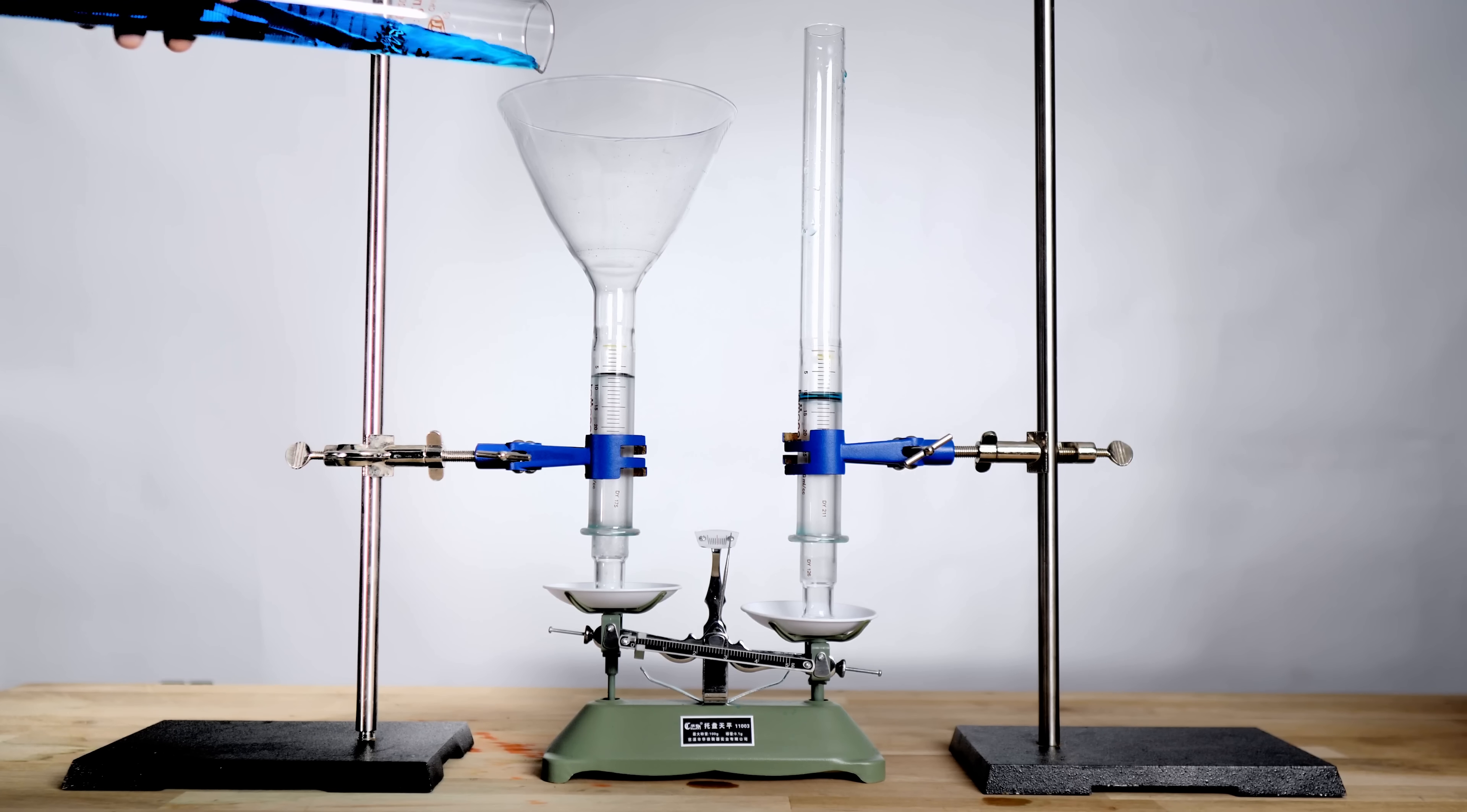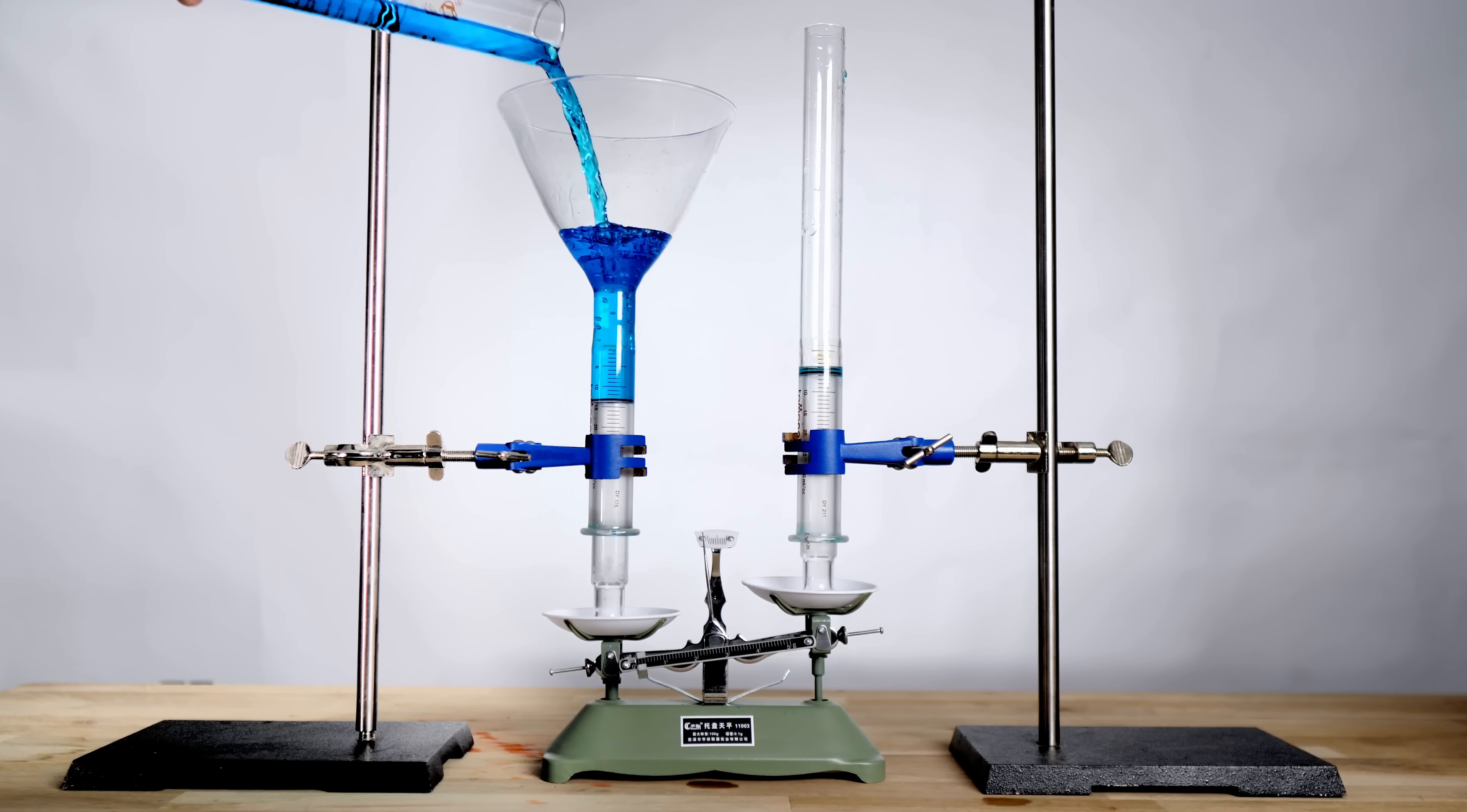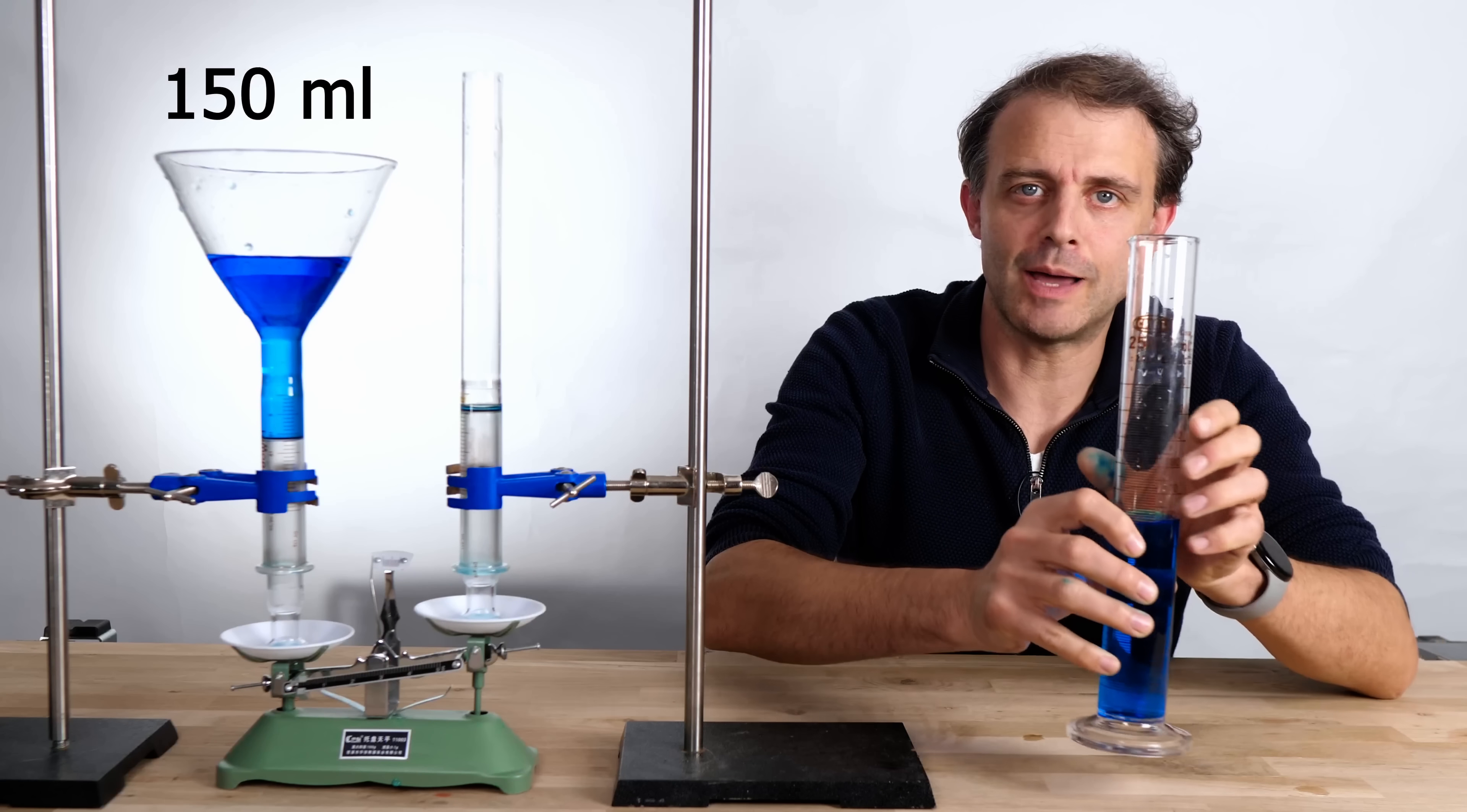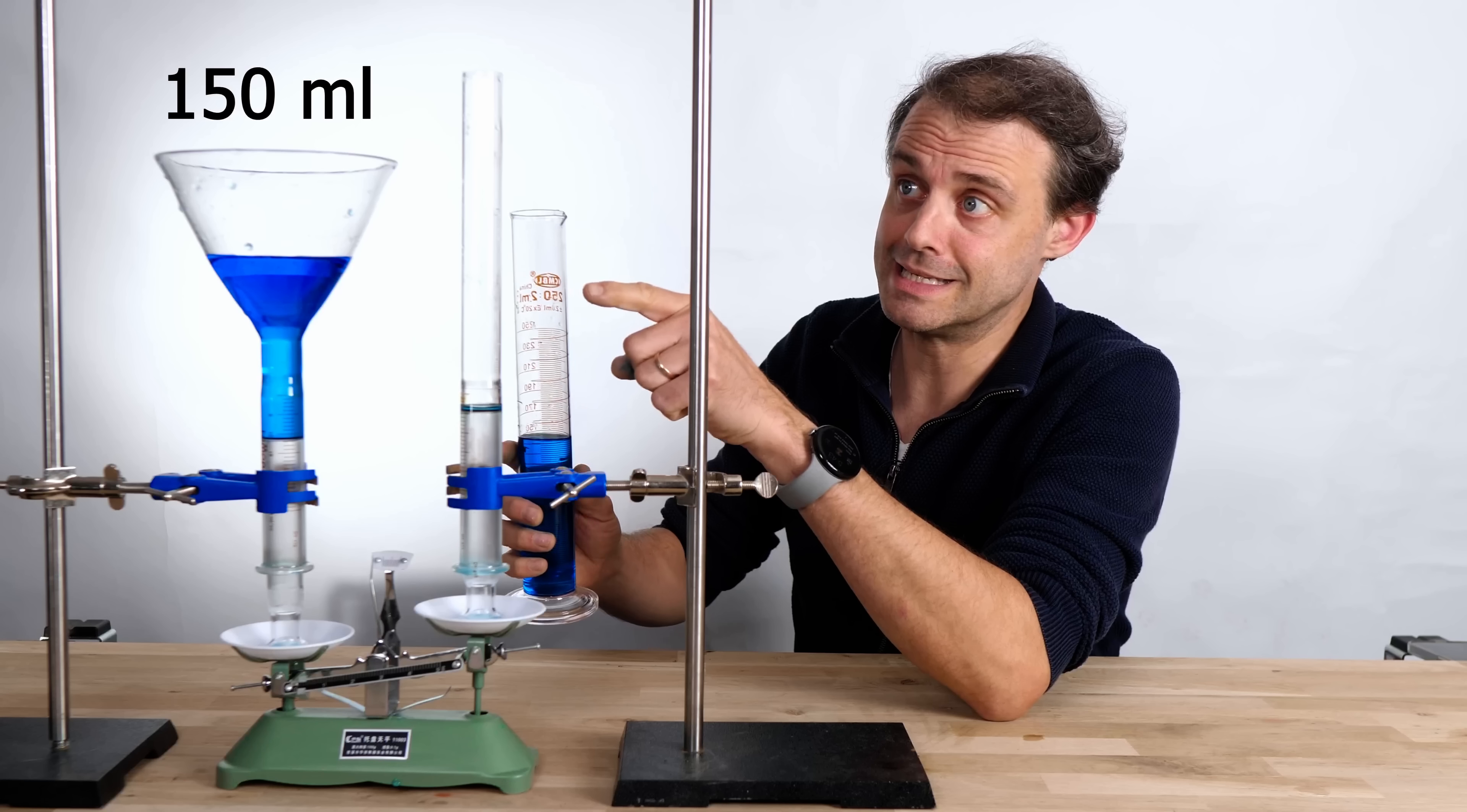When I pour water into this funnel-shaped container, the scales go down on that side, as you would expect. That was 150 milliliters. Let's see what happens when we pour 150 milliliters into this side.